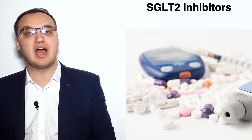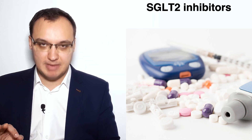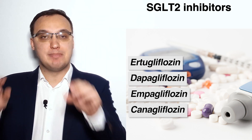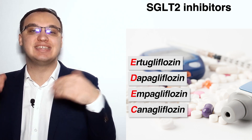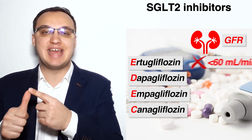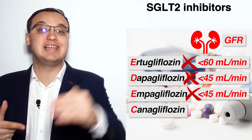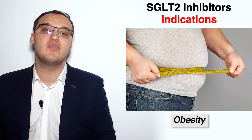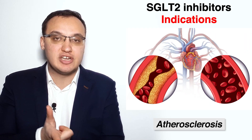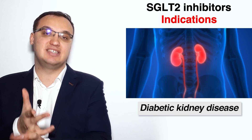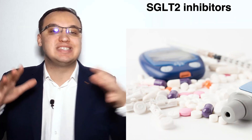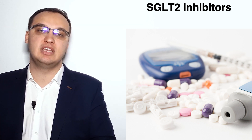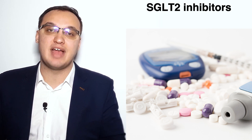To summarize: the four SGLT2 inhibitors are ertugliflozin, dapagliflozin, empagliflozin, and canagliflozin — remembered by the mnemonic EDEC in decreasing order of kidney insufficiency thresholds: less than 60, 45, 45, and 30 ml per minute respectively. SGLT2 inhibitors are particularly beneficial for obese patients, those with atherosclerosis or heart failure, and diabetic kidney disease patients. Separate lectures will cover each inhibitor individually. Thank you for listening.